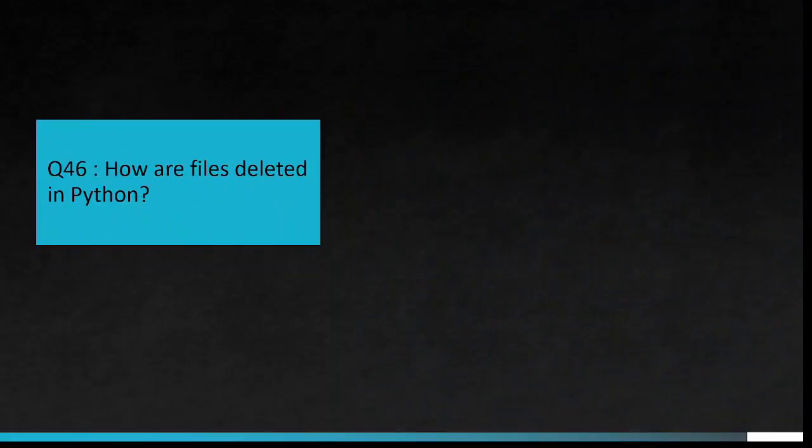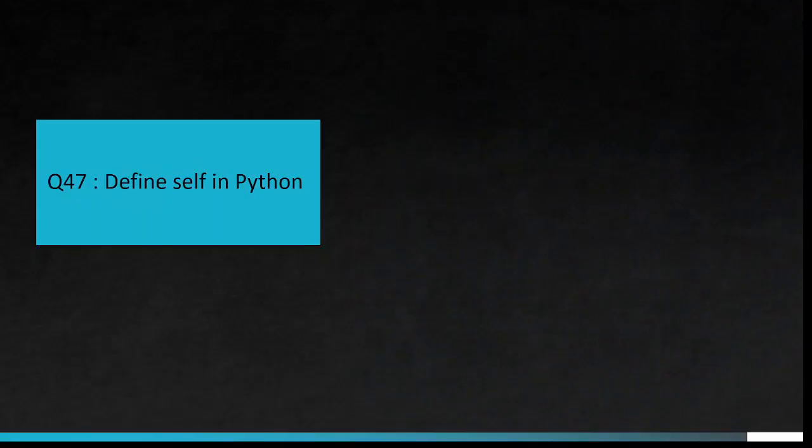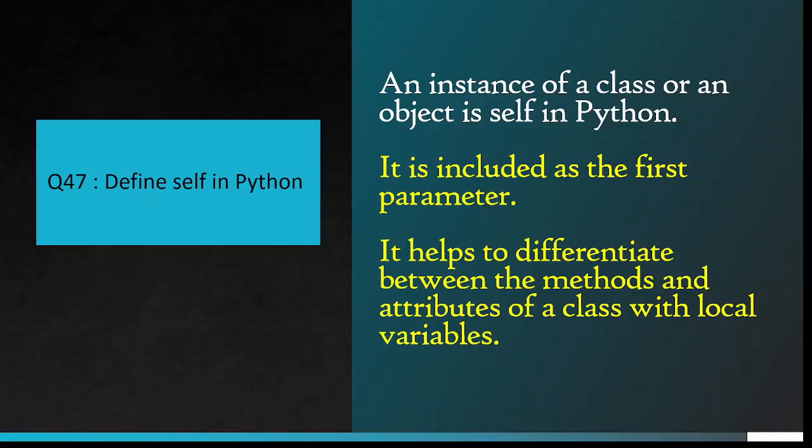Question number 46: How are files deleted in Python? Import OS module, OS.remove function. Question number 47: Define self in Python. An instance of a class or an object is self in Python. It is included as the first parameter. It helps to differentiate between the methods and attributes of a class with local variables.